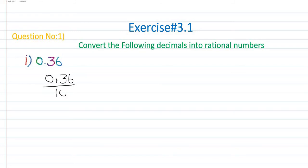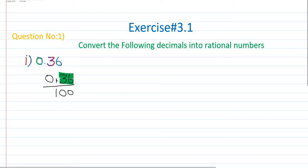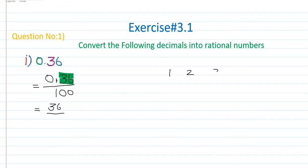We count how many digits are on the right side of the decimal point — here there are two digits, 3 and 6, so we place two zeros below. If there were three digits on the right side, we would place three zeros. When we remove the point we get 36 on top, ignoring the leading zero. So this becomes 36 over 100.